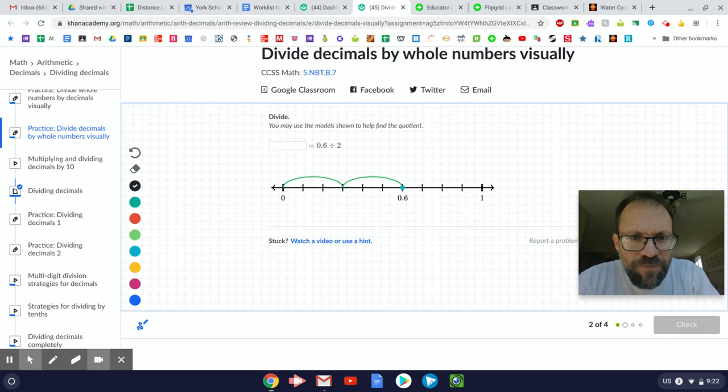All right, so let's take a look at the problem. The problem says six tenths divided by two. And we already have some part of the work set up for us. So if we take a look at what we have, we have a number line that starts at zero and goes to one. So that's one whole.